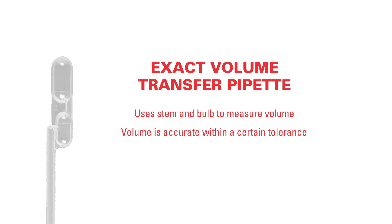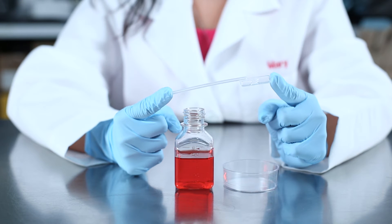It measures this accurate volume using the stem and the use of an overflow bulb, making the Samco exact volume transfer pipette easy to use. This specific pipette dispenses 250 microliters of liquid.